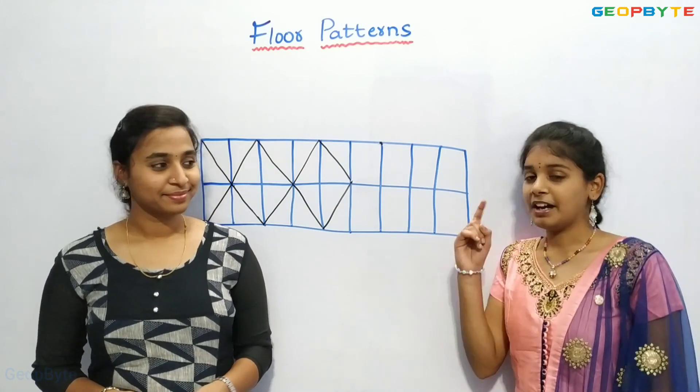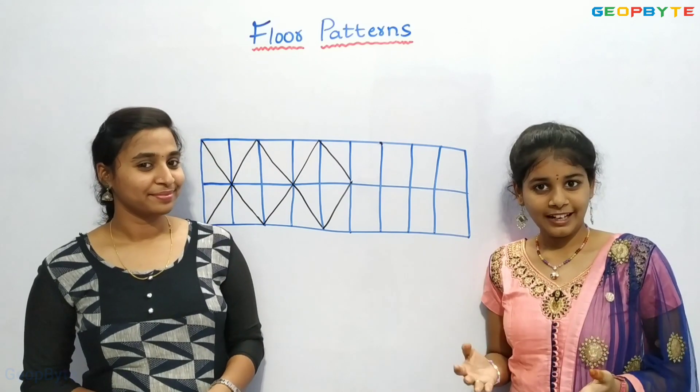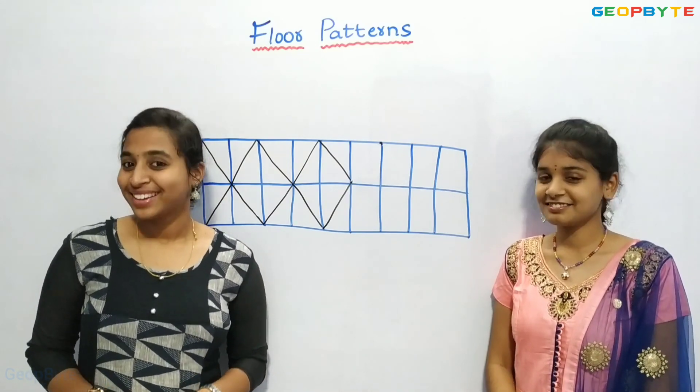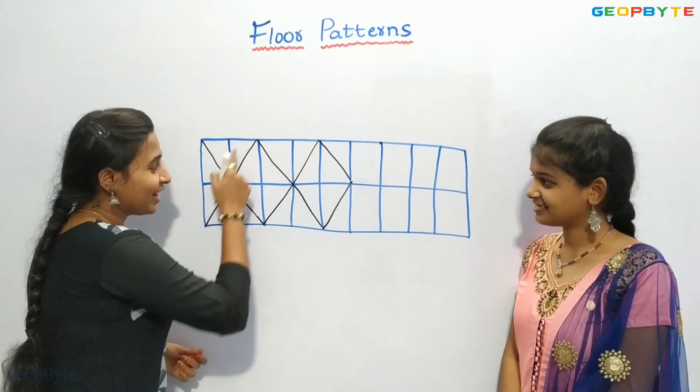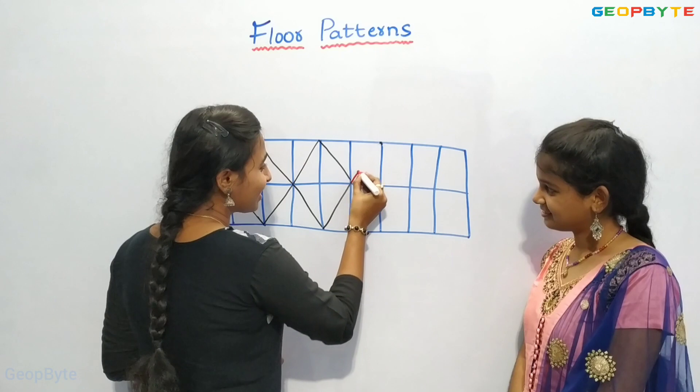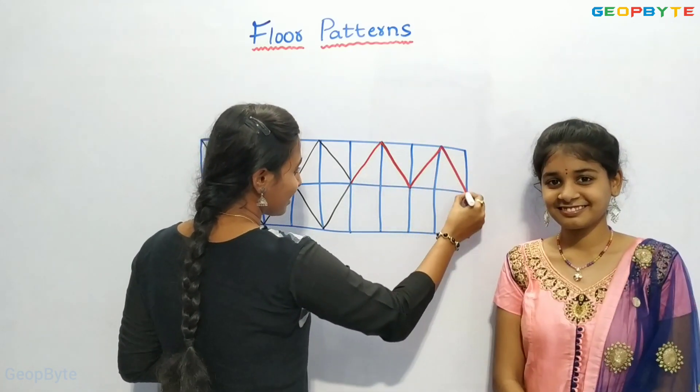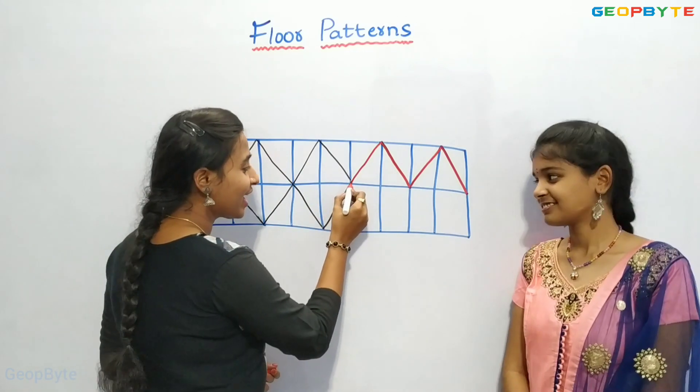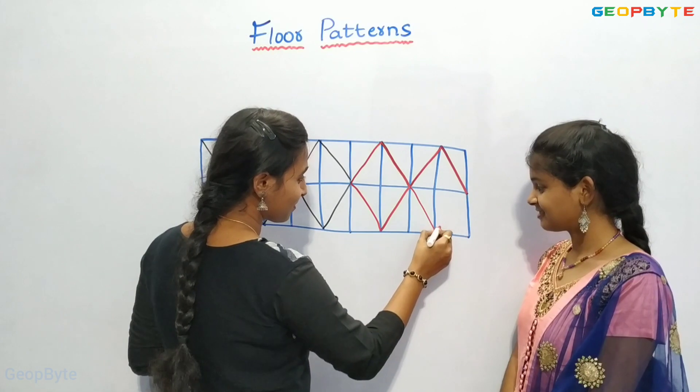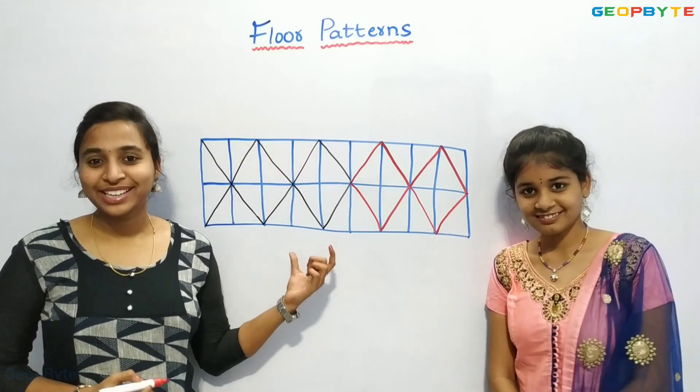Hey kids! There is a small activity for you — make your own tiles and use them to create tiling patterns. You will find them at the end of your textbook. Cut out, trace, and color them. Now my friend will complete this pattern to make a tiling pattern using triangles. I have completed this pattern.